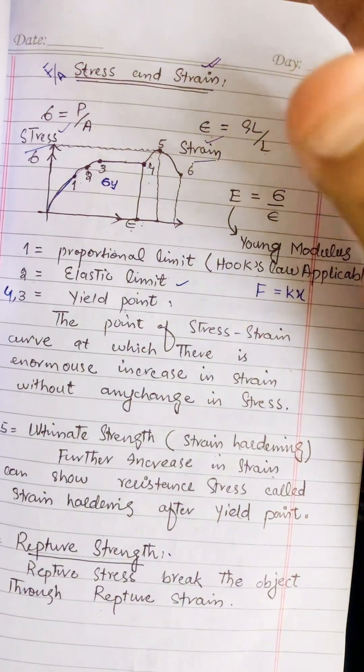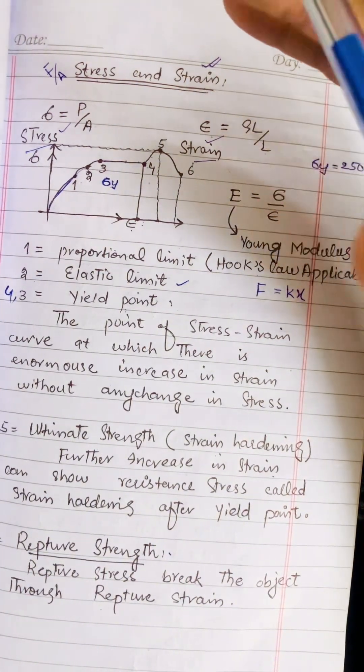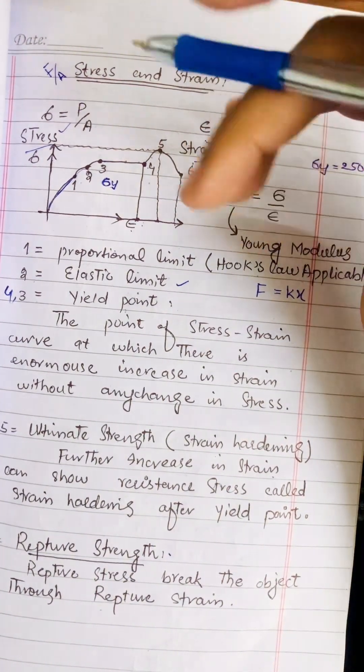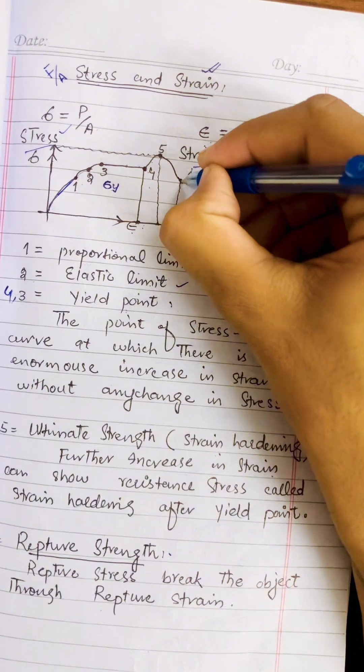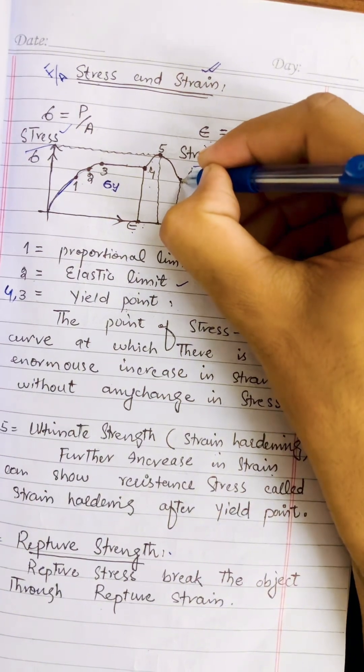A conceptual question arising from this lecture is: why is the rupture stress lower than the ultimate strength?